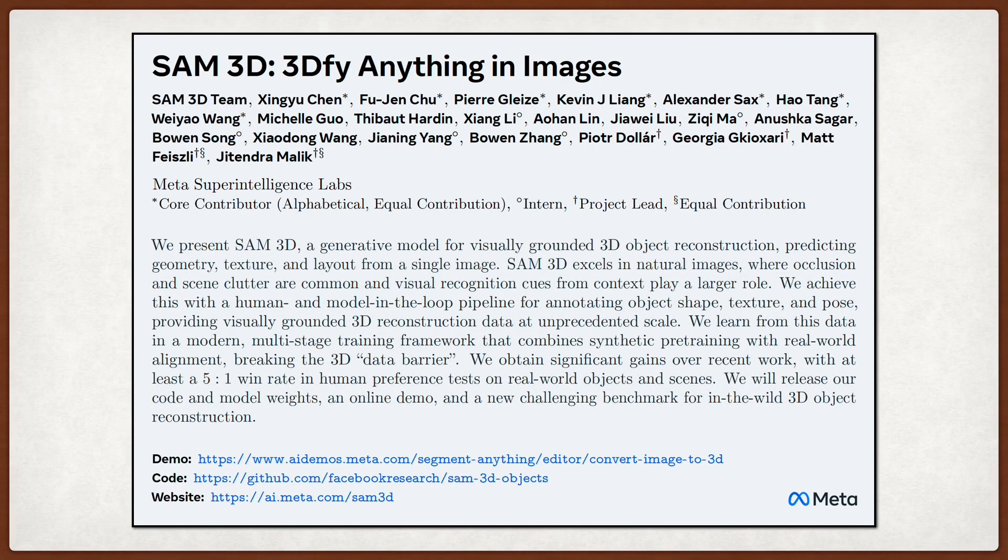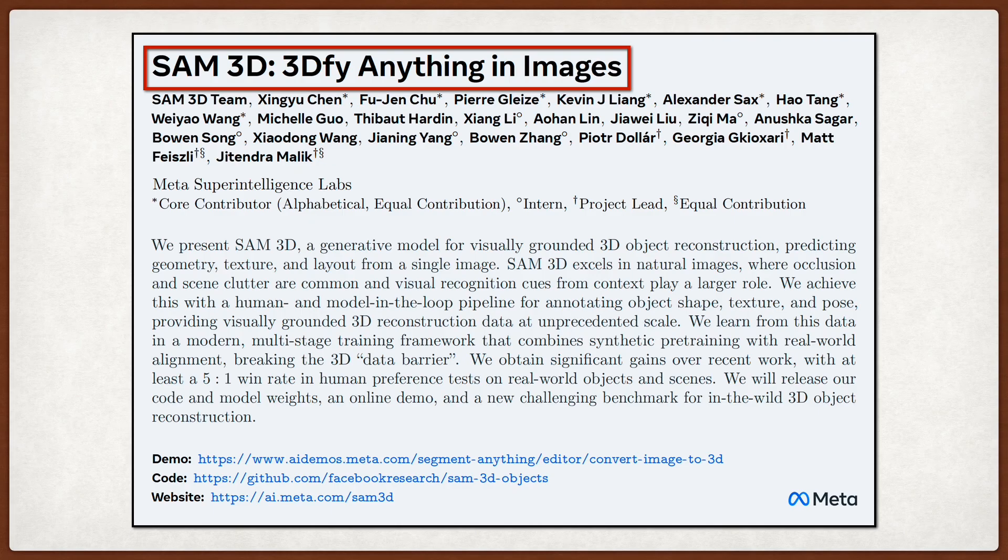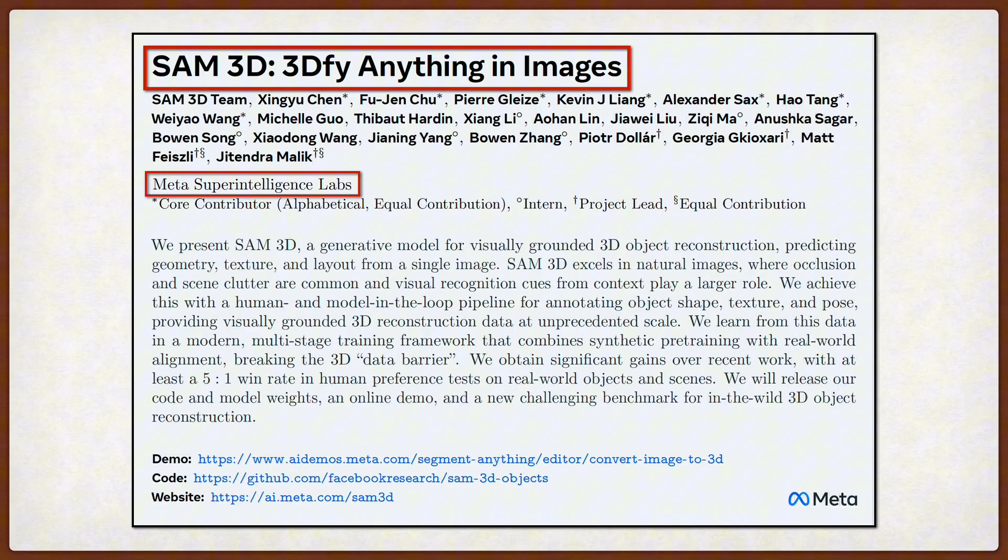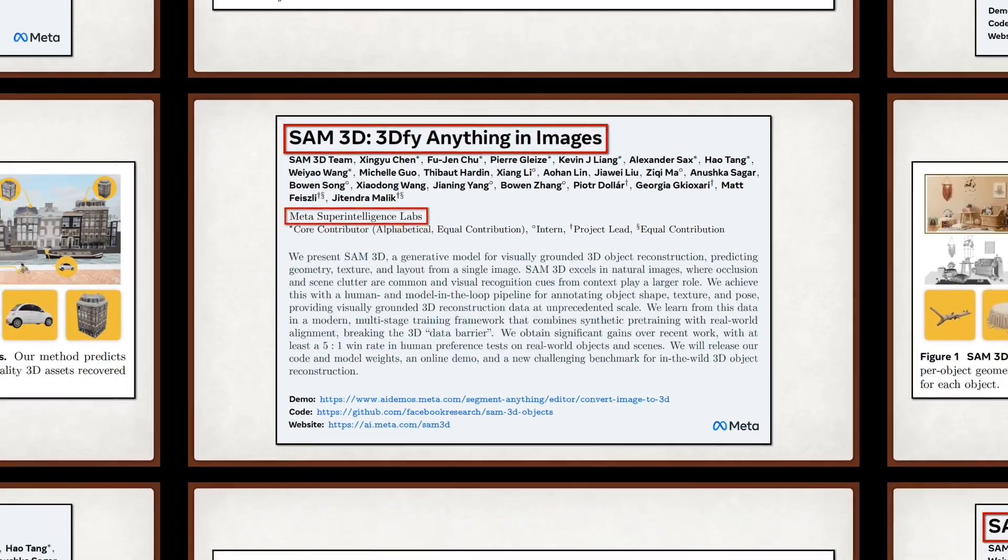Alright, so today we're looking at this paper called SAM3D, 3D-Fi Anything in Images, which comes out of Meta Superintelligence Labs. Now, you might remember the original Segment Anything model, or SAM, which was a huge deal for 2D segmentation.